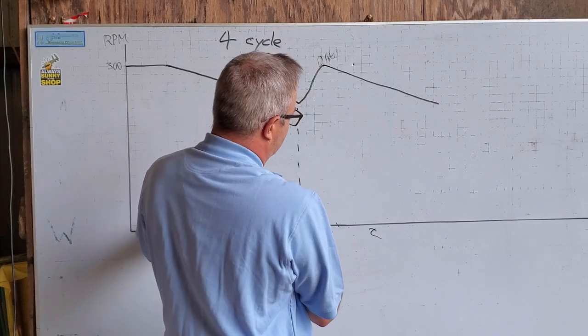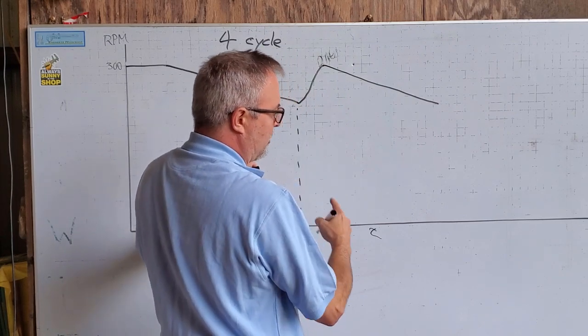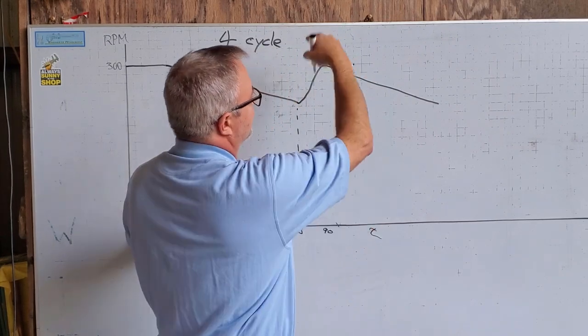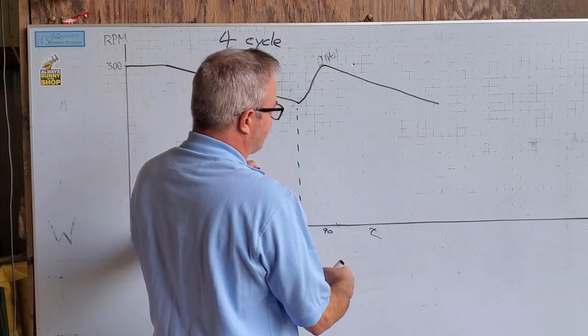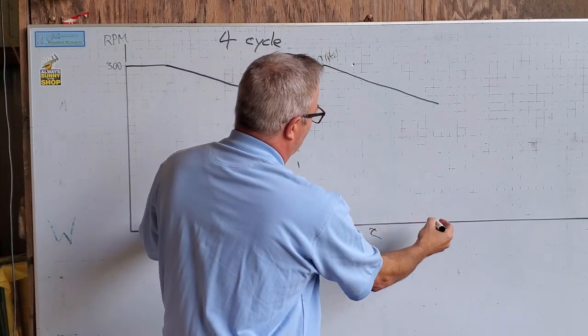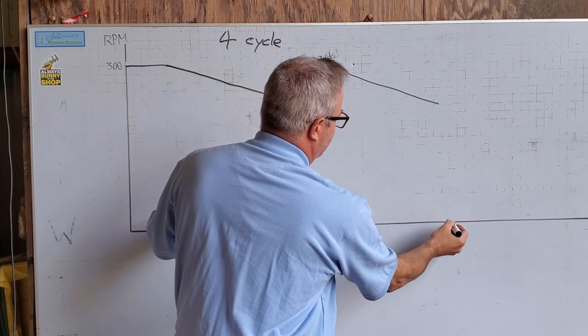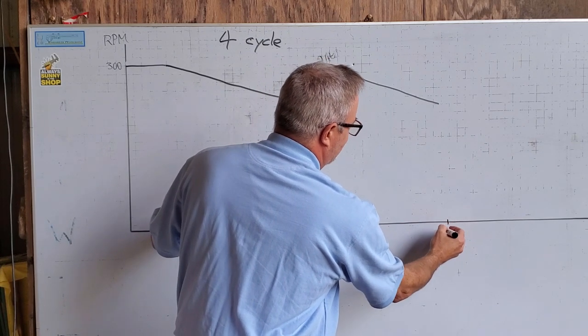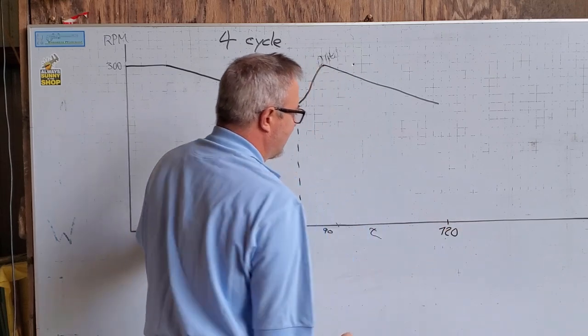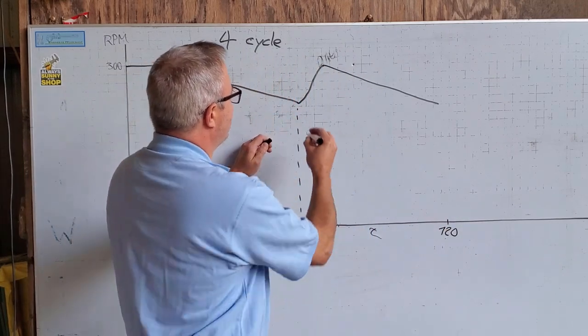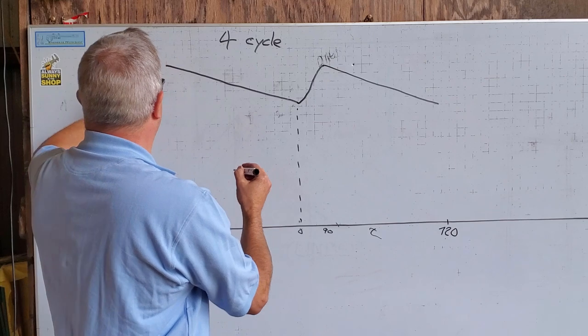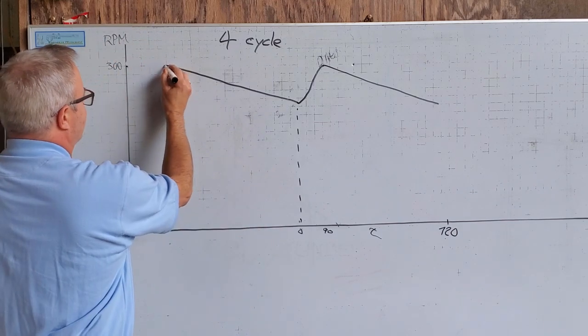And being a four-cycle motor, it takes four strokes of the piston to complete its cycle. So what we have is 720 crank degrees. So we have basically a sawtooth waveform of the flywheel speed.